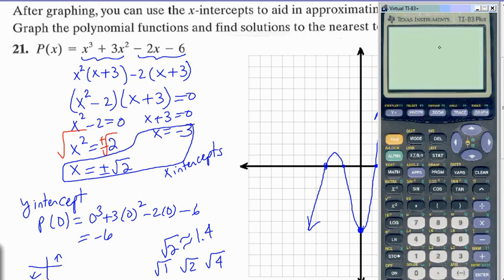We're going to graph the function to verify with our graphing calculator. Press y equals, click x. This is the x key. x cubed plus 3x squared minus 2x minus 6. Zoom 6 is our standard window, and that's the graph.